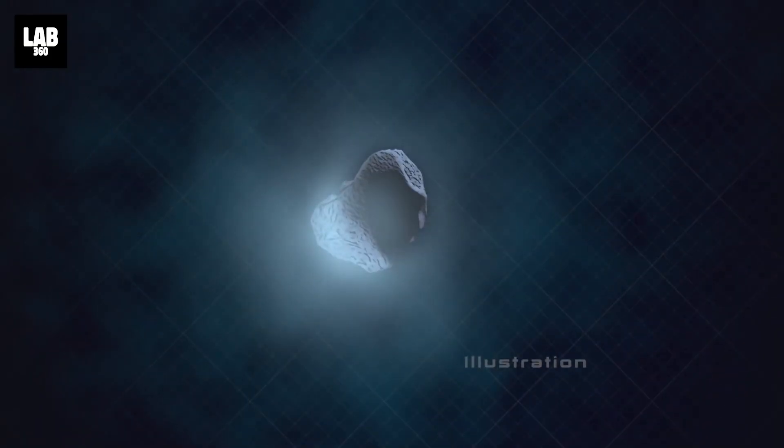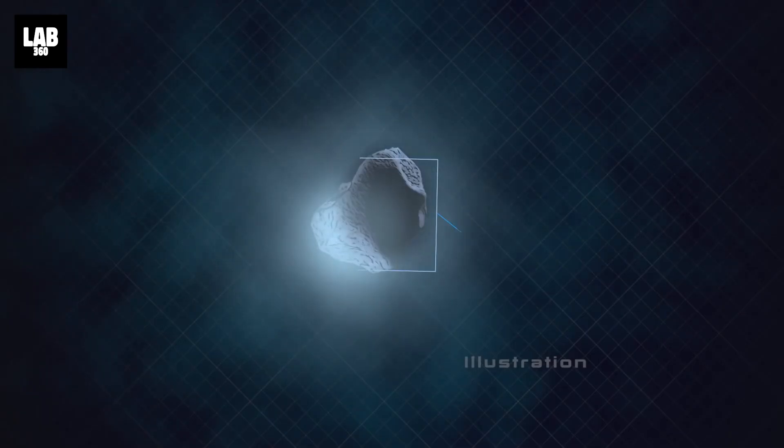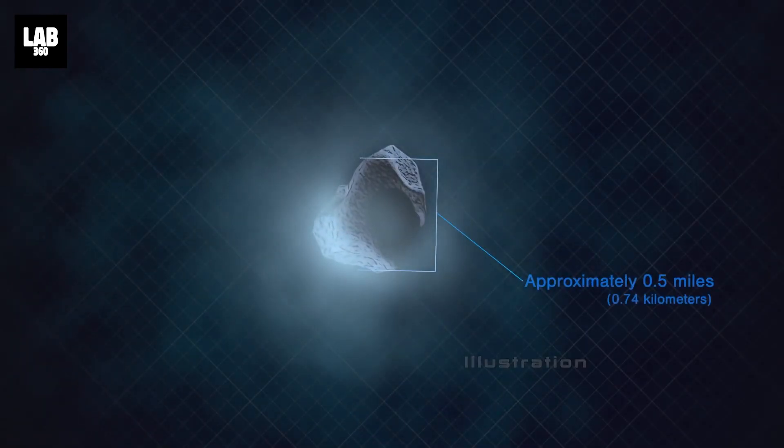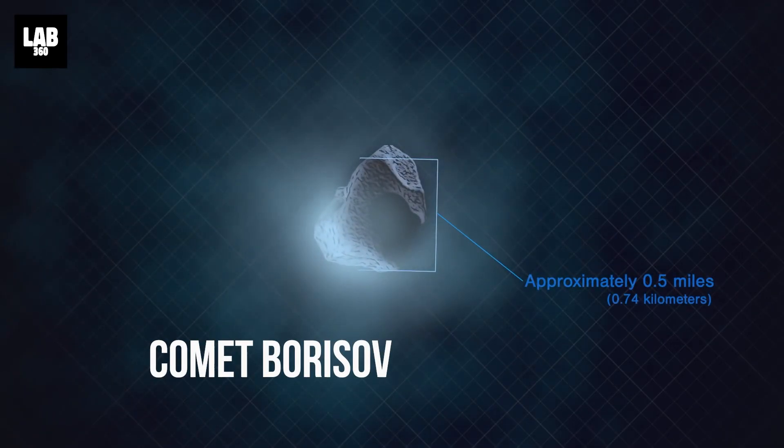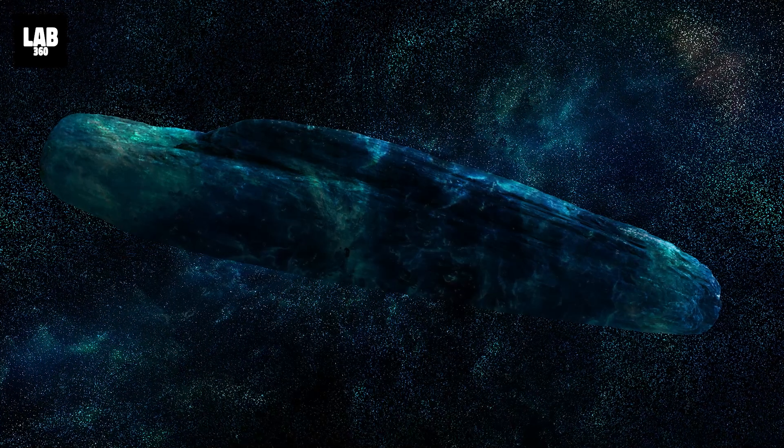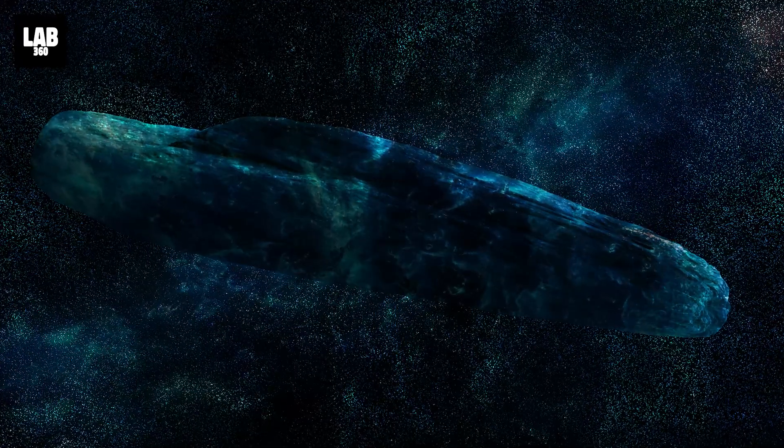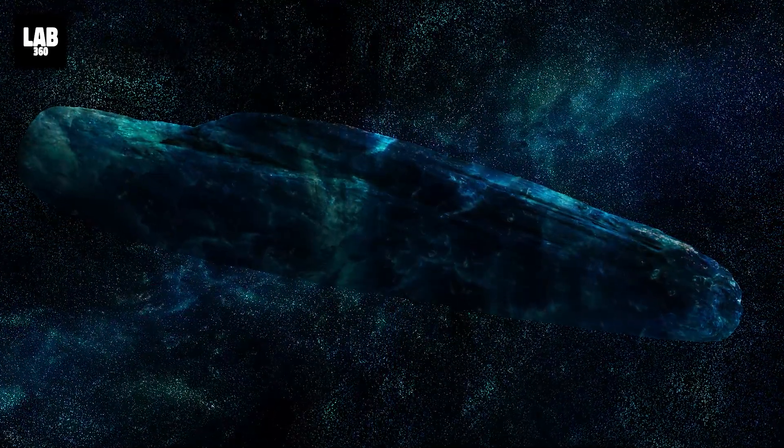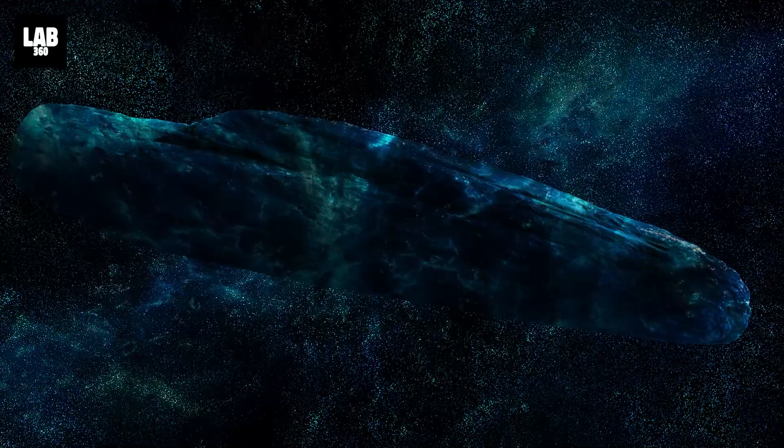It would not be wise to wait according to the scientists, because the second interstellar object ever found, 2I Borisov in 2019, resembles minor bodies already found in the solar system. This makes Oumuamua even more of an oddity, and it is unclear what the likelihood of encountering a similar object again is.